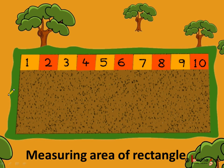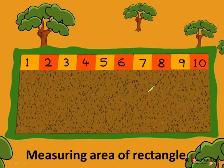So, counting: 1, 2, 3, 4, 5, 6, 7, 8, 9, 10. Ten tiles were required to fill a row. Mehnat Ram filled 5 such rows and finally all the land was filled with square tiles. The total number of tiles used were 50.